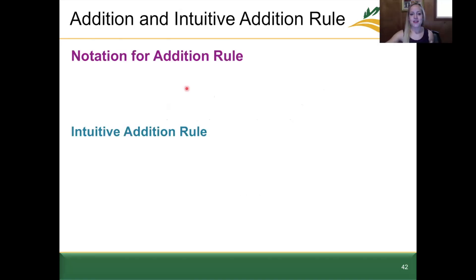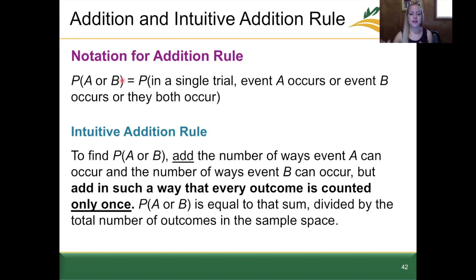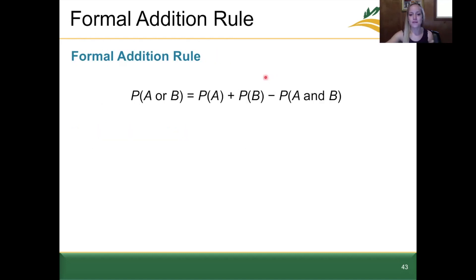Now let's talk about the notation for the addition rule. We're going to say the probability of event A or B occurring — notice that word 'or.' Intuitively, to find the probability of event A or B occurring, we're going to add the number of ways that A can occur and the number of ways that B can occur, in such a way that every outcome is counted only once. We also take into account the number of possible outcomes in the sample space.